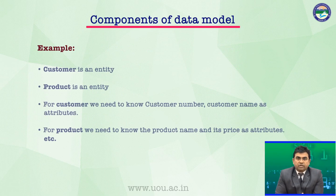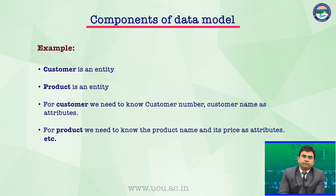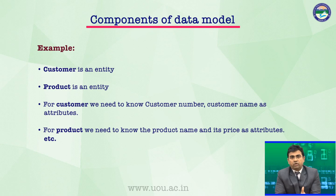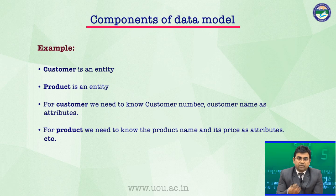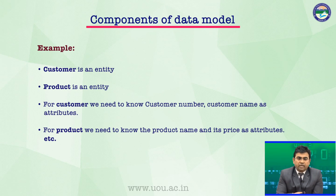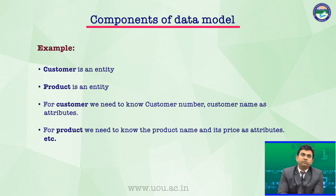Example: customer is an entity, product is an entity. अब उसमें attribute की बात करते हैं — for customer, we need to know customer number, customer name, उसका age, उसका date of birth. अगर हम data उसका रखते हैं, characteristic बताते हैं उस customer की, तो उनको हम attributes बोलते हैं. ऐसे product है — product we need to know the product name and its price — that is an example of entity and attributes.